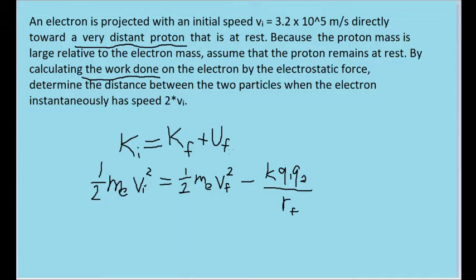The electric potential energy between two charged particles is equal to k times the product of their charges divided by the distance between them. The two charges we're dealing with are a proton and an electron, which both have the same charge magnitude but with opposite signs, hence the negative sign here. Since the proton and the electron have the same magnitude of charge — the elementary charge — I'll just rewrite this charge part as e squared, where e is the elementary charge.